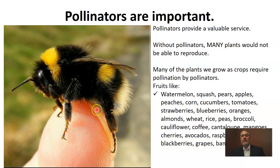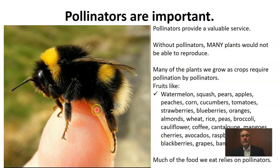When you look at the list, it's really incredible. Things we'd see in the grocery store — watermelon, squash, pears, apples, peaches, corn, cucumbers, tomatoes — the list goes on and on, down to rice and beans. Many of the foods we eat simply could not exist if insects did not carry pollen from flower to flower. In some ways, pollinators are really at the base of the food chain. So why are pollinators important? Because many of the crops we rely on for food require pollen to be moved from plant to plant, and pollinators do that job for us — for free.